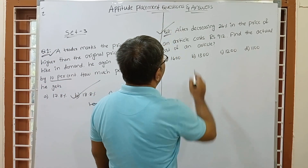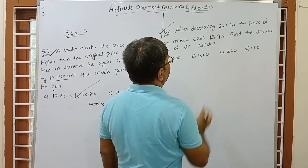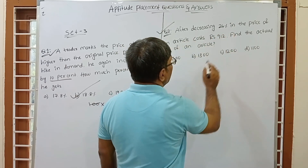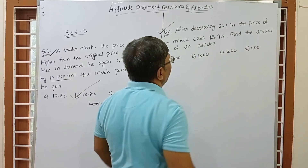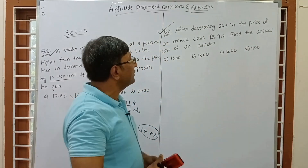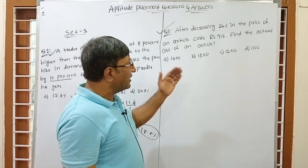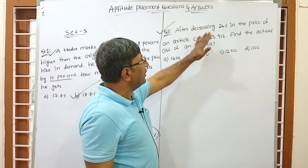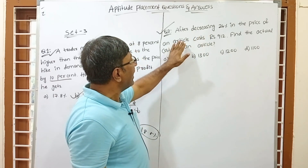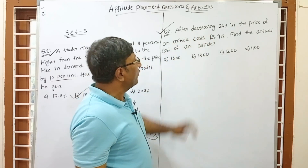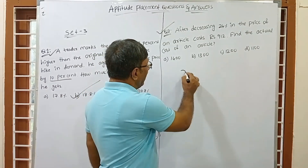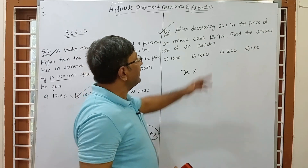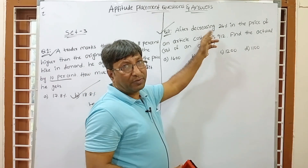Now the second question: after decreasing 24% in the price of an article, the cost becomes 9/2. Find the actual cost of the article. This is a different type of question and is commonly asked in interviews. Suppose the original cost of the article is x.